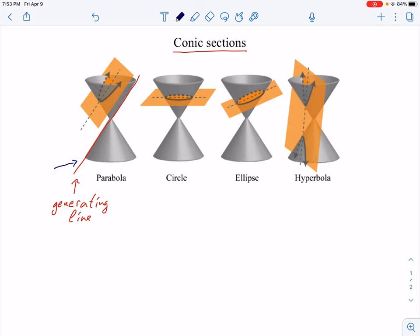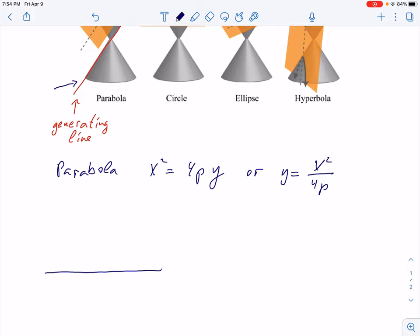And we shall talk about the equations of these conic sections. Here is the standard equation for the parabola: x squared equals 4py or solved for y, this will be x squared divided by 4p. This is a parabola which opens up and its vertex at the center of the coordinate system.